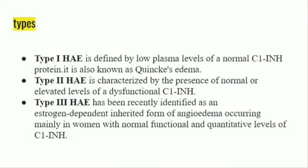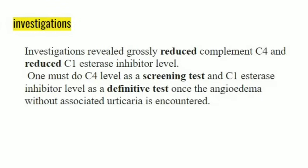To clarify: Type 1 has reduced but normal C1-inhibitor protein that is not dysfunctional, while Type 2 has dysfunctional C1-inhibitor protein. Type 1 hereditary angioedema is also known as quincke's edema. Investigation of a patient with hereditary angioedema will reveal reduced complement C4 level and reduced C1-inhibitor level. If a patient presents with angioedema without associated urticaria, C4 level should be done as a screening test and C1-inhibitor level as a definitive test, especially for Type 1, which has significantly reduced levels of C1-inhibitor.